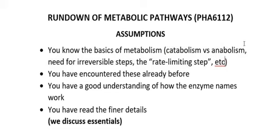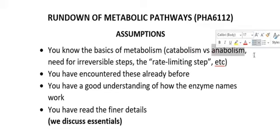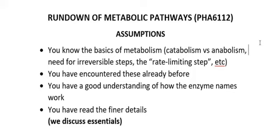You should know the difference between catabolism and anabolism. Other than the fact that catabolism is breakdown and anabolism is building up, you should also be familiar with how to interpret a pathway name. For example, if a pathway ends in the word '-lysis', like glycolysis, lipolysis, or glycogenolysis, then that means you're breaking something down. For anabolism, if you have '-genesis' as a suffix, like glycogenesis or lipogenesis, that is a building-up process.